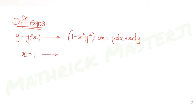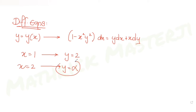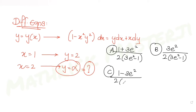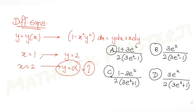The question tells us further that if the line x = 1 intersects the solution curve y = y(x) at y = 2, and the line x = 2 intersects the same curve at y = α, then we need to find α. The answer choices are: (1) (1 + 3e²) / [2(3e² - 1)], (2) 3e² / [2(3e² + 1)], and (3) 3e² / [2(3e² + 1)].